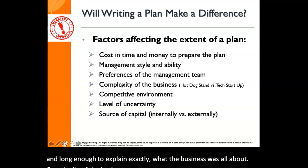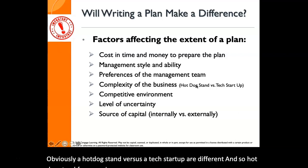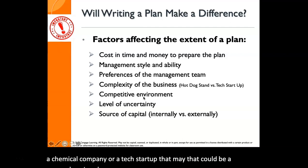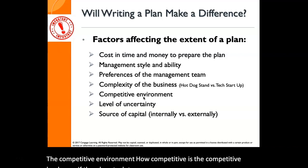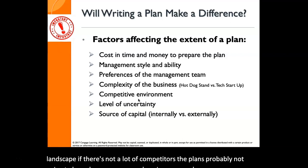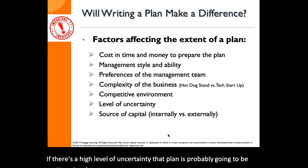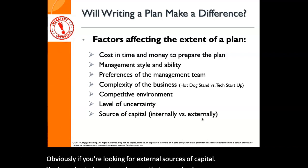Complexity of the business matters too. A hot dog stand versus a tech startup are very different — a hot dog stand is probably going to have a very short business plan, while a chemical company or tech startup could have a comprehensive plan. The competitive environment: if there's not a lot of competitors, the plan probably won't be as long as one where competition is very fierce. Level of uncertainty — if there's a high level of uncertainty, the plan is probably going to be pretty extensive. And sources of capital: if you're looking for external sources, you'll need to make sure your plan is fairly extensive and explains everything in detail.